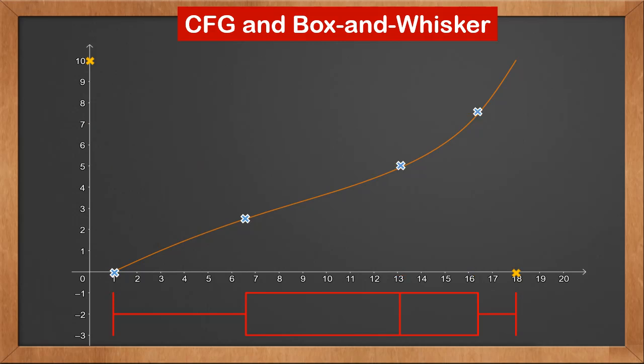Once we have those five points, we can connect them with a smooth curve to get the cumulative frequency graph. Therefore, we can convert between cumulative frequency graph and box and whisker plot.